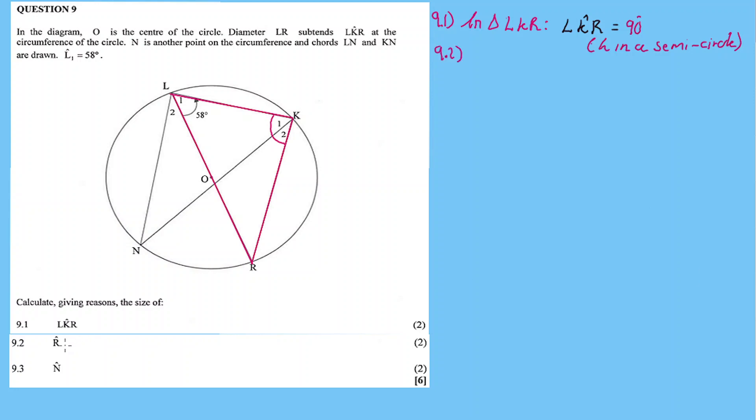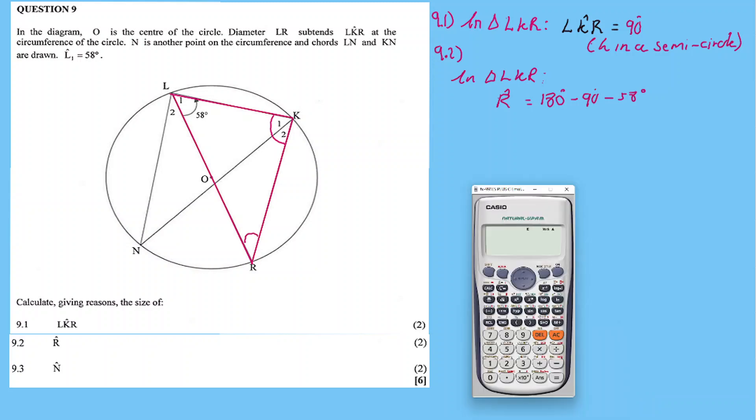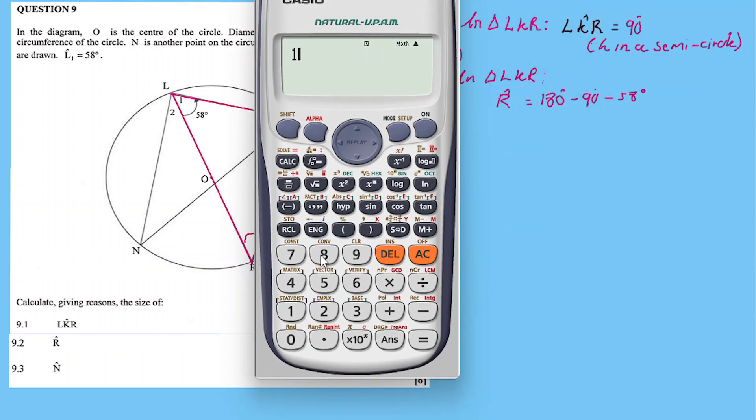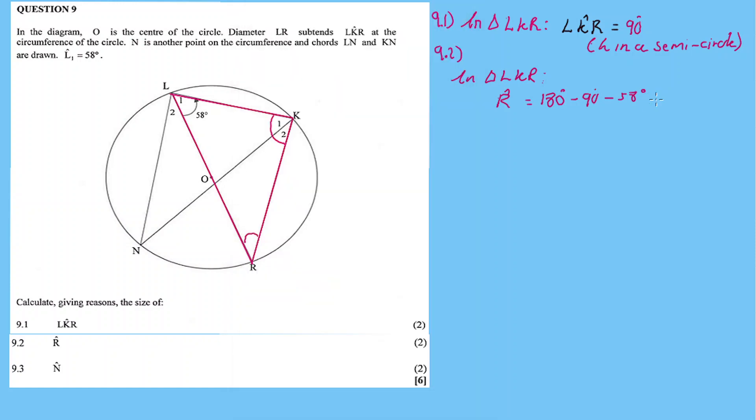9.2, find angle R in triangle LKR. We have two angles in this triangle, so find the third one. Therefore, angle R equals 180 degrees minus 90 minus 58.